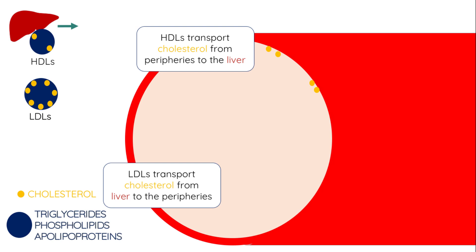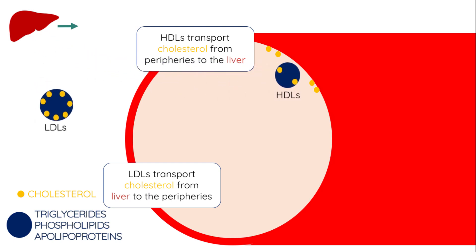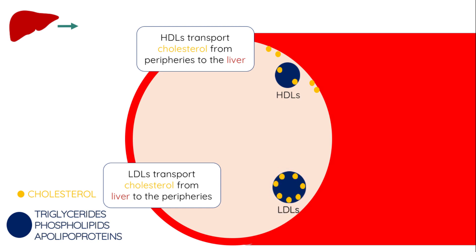High density lipoproteins are also made in the liver and contain low amounts of cholesterol. Their aim is to retrieve any surplus cholesterol in the body and return it to the liver where it can be packaged into bile acids or into low density lipoproteins.